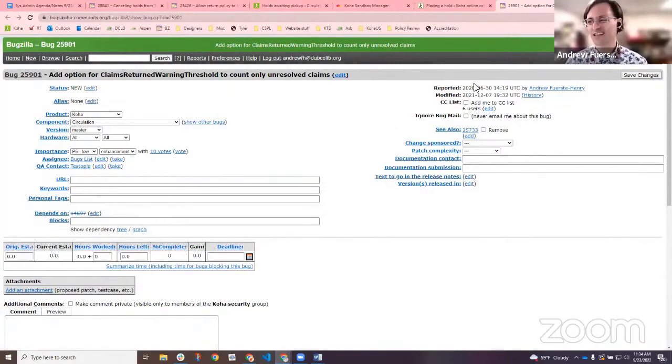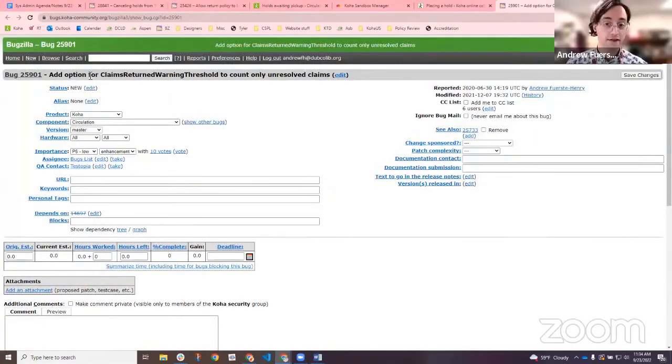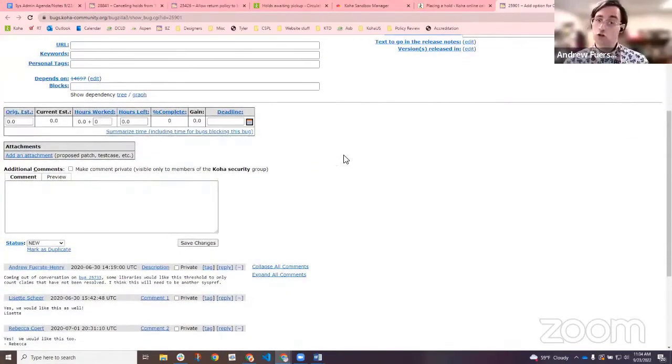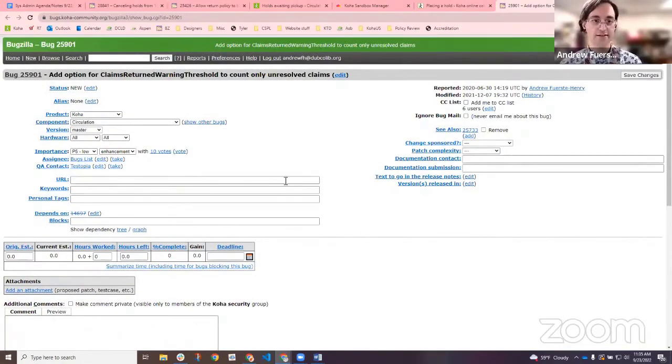And then she gave an example of a stalled bug. Looks like this particular one. It's not in discussion. It just hasn't moved at all for nigh on a year. And yet that will happen. I guess part of my answer to you, Rebecca, would be do something like this. Get other people to know that your bug exists. Even though I filed this bug, I had forgotten about it. So, hey, everybody. Bug 25901, add option for claims return warning threshold to count only unresolved claims. If you're using claims returned and you like that little message that says this patron has too many claims, but you would like it to only count the ones that haven't been resolved, come over to Bugzilla. Make a stink.